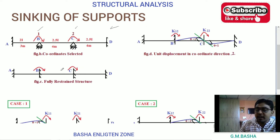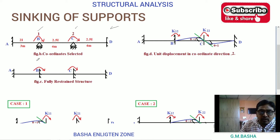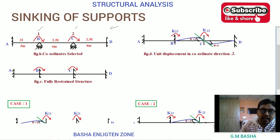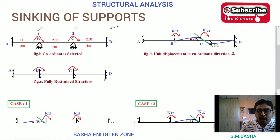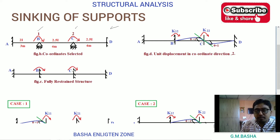The fully restrained structure means fixing the total structure including the selected coordinate positions 1 and 2. To find K11, we release the structure at B, fix everything else, and apply a unit moment at B. To find stiffness at the second position, we release at C, fix everything else, and apply a unit moment at C. Delta 1 and delta 2 are the basic unknown displacements obtained by solving the system.